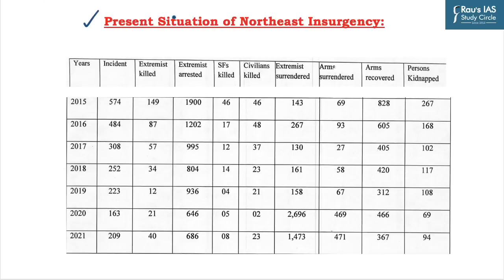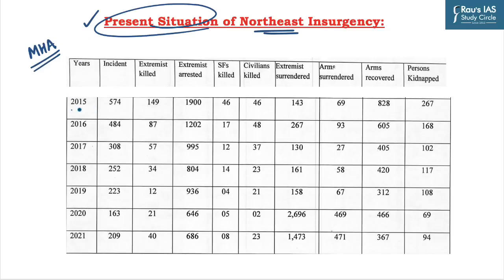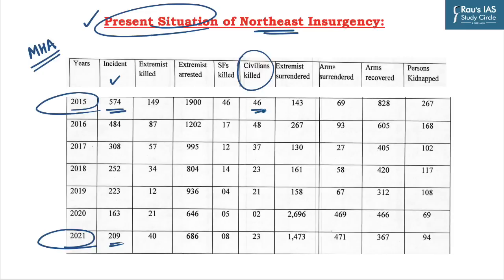Looking at the present situation of Northeast insurgency, data compiled by the Ministry of Home Affairs shows that from 2015 to 2021, the incidence of violence reduced drastically from 574 to 200 cases. Civilian deaths also reduced from 46 to 23. Extremist surrenders rose significantly from 143 in 2015 to 1,400 in 2021. Persons kidnapped also reduced from 267 to 94, showing that the overall situation in the Northeast region has improved.